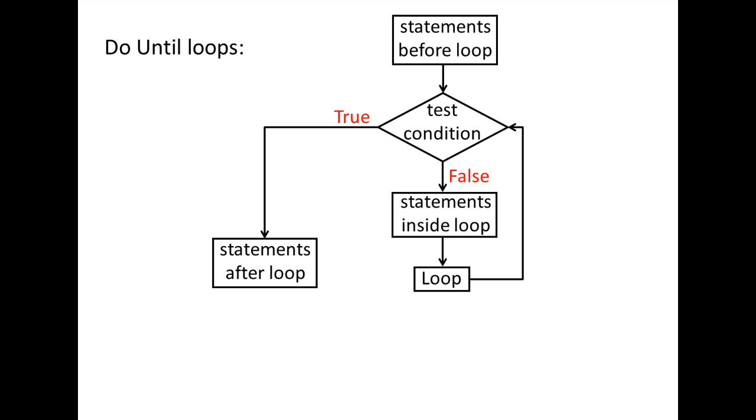A DO UNTIL loop has a similar flowchart except the TRUE and FALSE branches are switched.